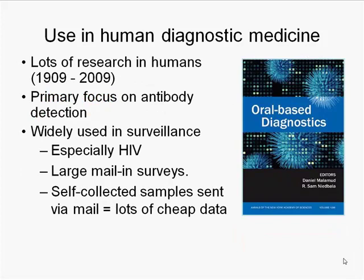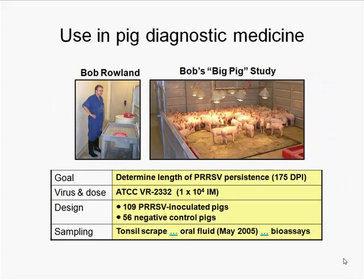If a patient comes up positive, they draw blood to confirm, allowing very quick identification of false positives. There is a ton of research on the human side from 1909 to 2009, primarily focused on antibody detection. They've done surveillance studies, huge numbers in HIV, and even mail-in surveys for measles — a large study in England and Wales where mothers collected samples at home from kids, mailed them in, over 11,000 samples. Very easy technology that makes testing highly accessible at pretty cheap cost.